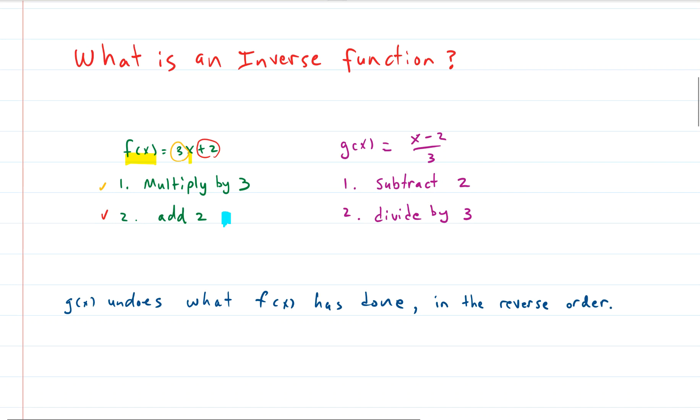So it undoes what has been done by the function in reverse order. So the last thing that the function did is the first thing the inverse will undo and so on. So what was the last thing that happened with the function? We added two. Well what is the opposite of adding two? That would be subtracting two. So the first thing that's done to the input of the inverse function is we're going to subtract two.